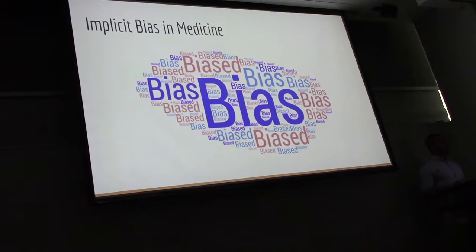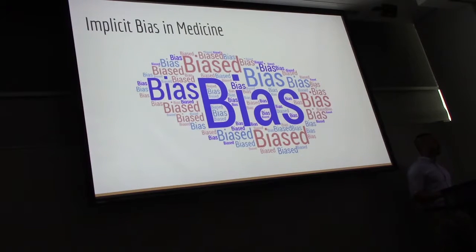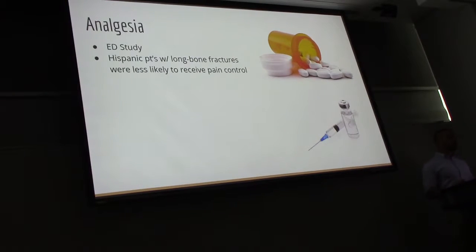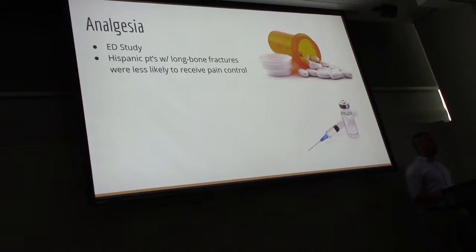Interestingly, a lot of the research on bias in medicine has come out of the ED. The first studies looked at distribution of analgesia and expanded from there — everything from cardiac cath to treatment of renal disease, diabetes, and mammography have all been linked to physician bias. One of the first studies, done at UCLA in 1993, looked at whether Hispanic patients with long bone fractures were as likely as their white counterparts to receive pain medication. It found that Hispanic patients were twice as likely as non-Hispanic white patients to not receive pain medication, and Hispanic ethnicity was the strongest predictor of not receiving analgesia even when controlling for sex, primary language, and insurance.